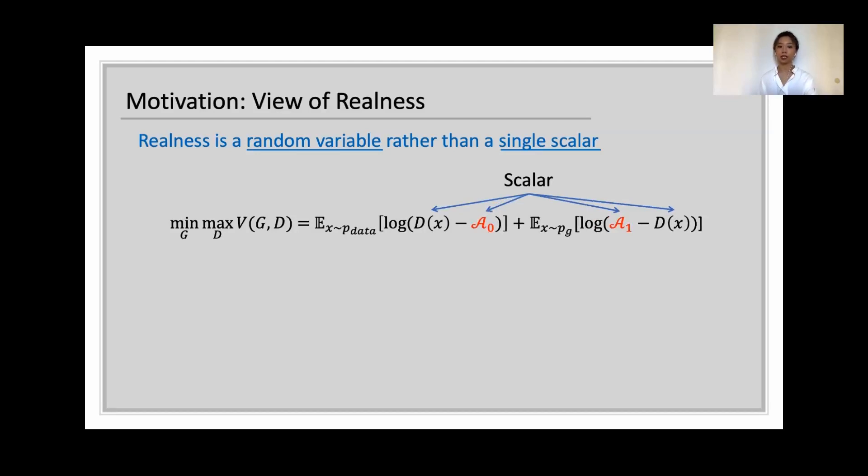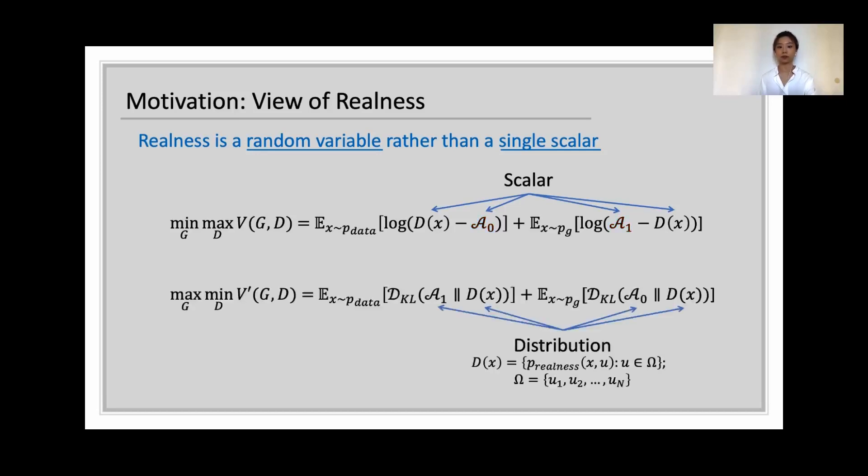Therefore, in the standard setting, D(x) is a scalar, and these two anchors are also scalars. If we are to treat D(x) as a random variable, in other words in the form of a distribution, a0 and a1 should also be converted into distributions over the same set of outcomes. Similarly, we adopt Kullback-Leibler divergence to measure the distance between D(x) and these two anchors.